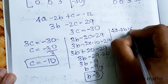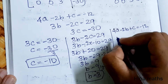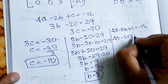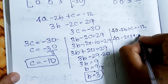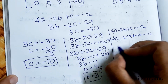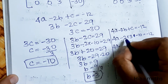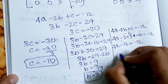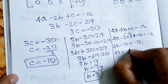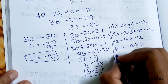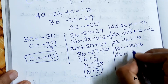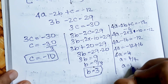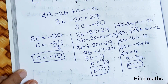Now substituting b = 3 and c = -10 into 4a - 2b + c = -12: 4a - 2(3) + (-10) = -12, so 4a - 6 - 10 = -12, 4a - 16 = -12, 4a = 4, a = 1. So a = 1, b = 3, c = -10.